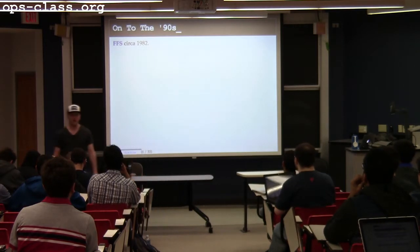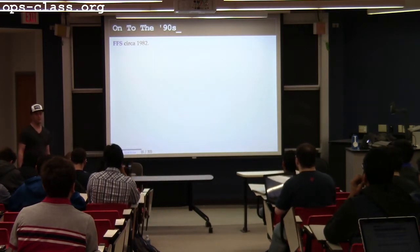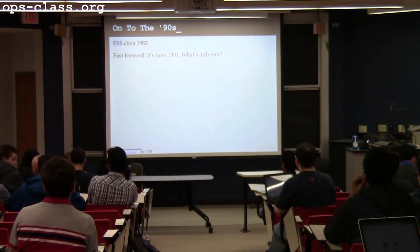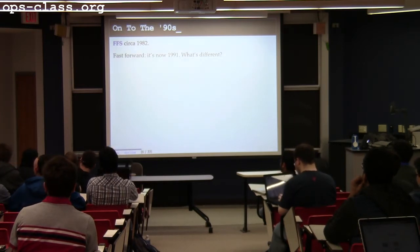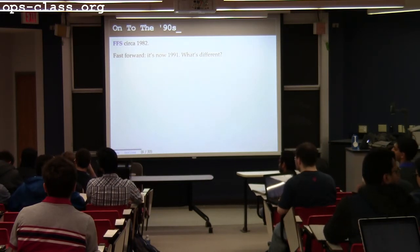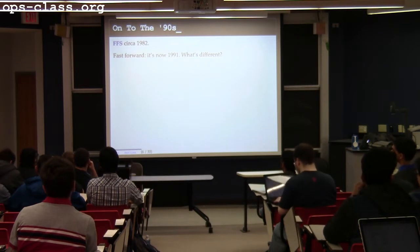FFS was a file system designed circa 1982. Now we're going to fast forward to 1991. How many people were alive in 1991? Very few. At least there's more than one hand up — 1982 is zero. So what's different about 1991 versus 1982?